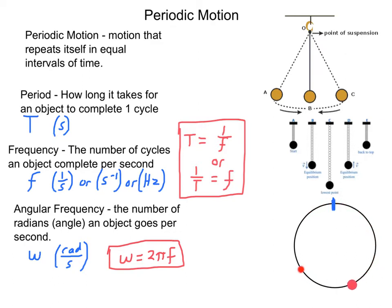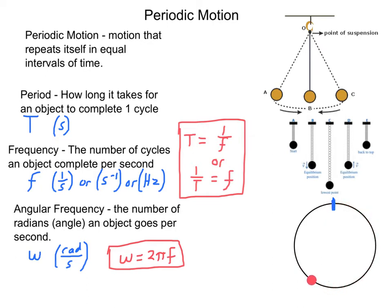So how long it takes for this little red dot to go all the way around my circle, this ball to go all the way around its orbit, or this planet — if there's a sun or something else in the middle — to go all the way around the star.